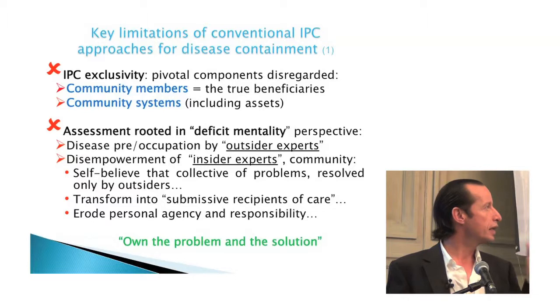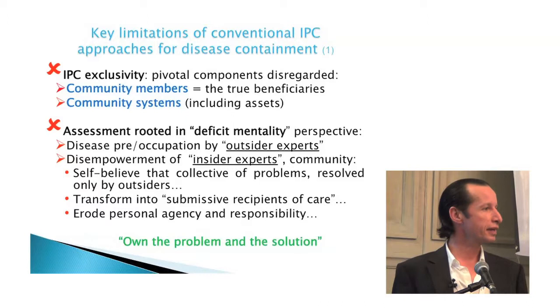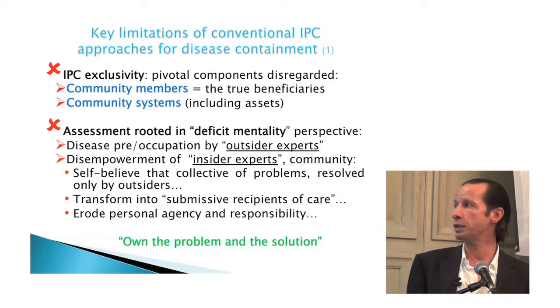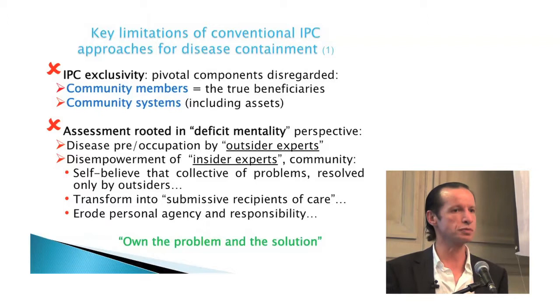The two pivotal components we keep forgetting are the community members — they are ultimately the beneficiaries of infection control — and the broader community system: the structures, organizations, people, and their assets. We're also very much trapped in a deficit mentality framework. We look at disease, problems — and quite often it's from an outsider perspective. We look into communities and say: you've got Ebola, you've got poverty, everything is a problem. And from the community side, you start believing that, thinking only outside people can help.